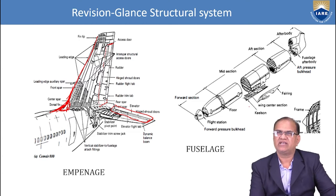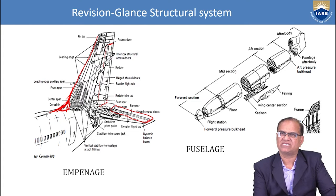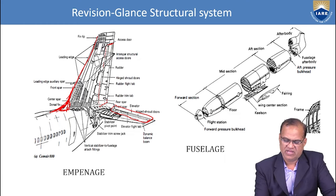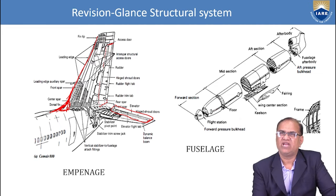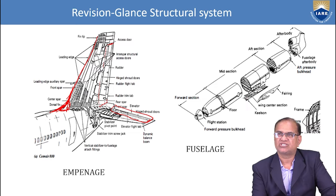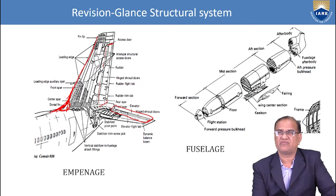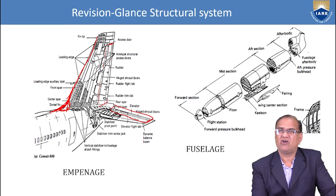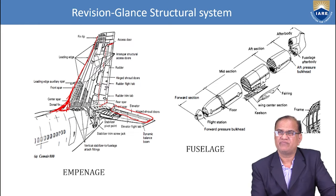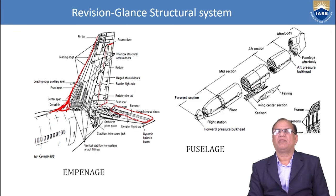The fuselage can be divided into four sections: the forward section, mid section, aft section, and after-body section. In the forward section we have the cockpit. In the mid section we have the total fuselage where passengers are accommodated and where the wing is installed at the fairing. Here the keelson is the strongest point where every load is transferred. In the aft section we have the aft pressure bulkhead, and the empennage — horizontal tail and vertical tail — are fixed here. The fuselage has frames, longerons, and stringers.